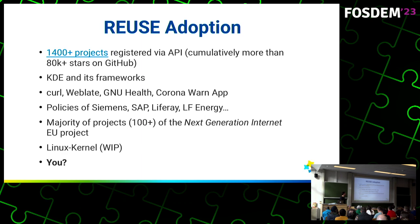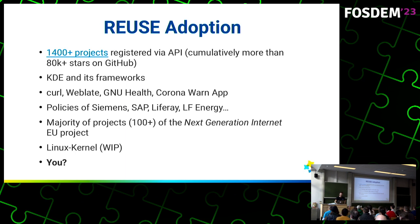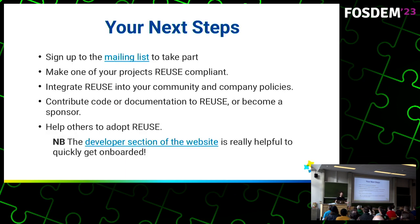Who uses ReUse? At the moment we have over 1,400 projects signed up that use our API, with cumulatively more than 80,000 stars on GitHub. There's stuff on other forges too, like KDE and its framework. Curl became ReUse compliant. There's Weblate, a really cool translation product that recently became ReUse compliant. The GNU Health Project, the CoronaWarn app in Germany. And the Linux kernel is trying to become ReUse compliant — it will take a while. Feel free to check this out. Sign up to the mailing list, ask questions, create issues, make one of your own projects ReUse compliant — it's really easy. Integrate ReUse into your community and compliance policies. Help others adopt ReUse.